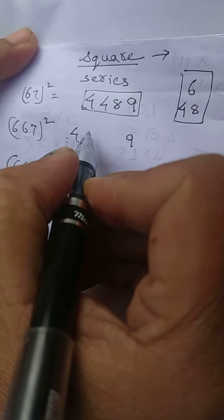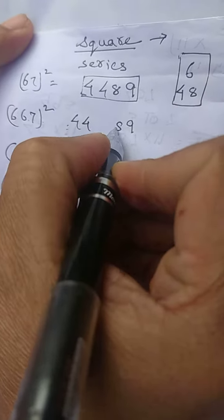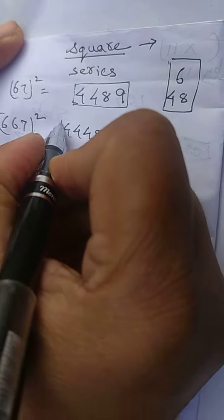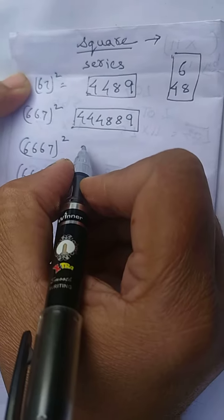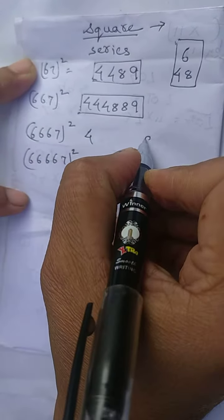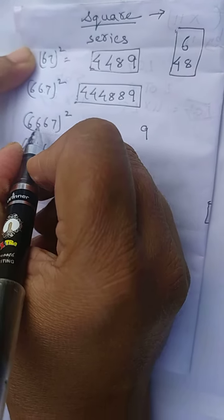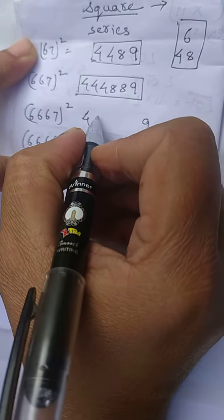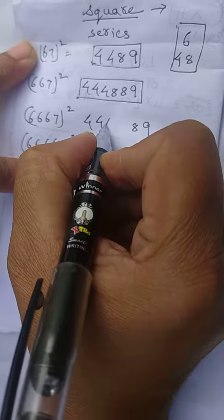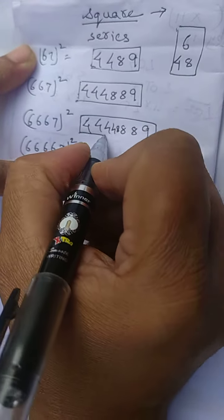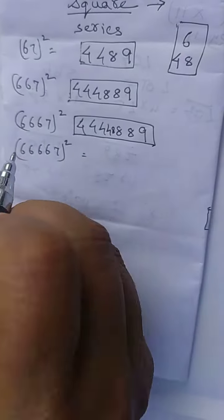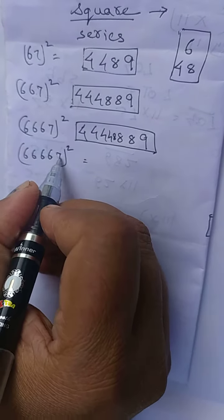Again, for 6667, just use the trick. Write 4 and 9 because of the 7. There are three 6s, so three times you take 48.